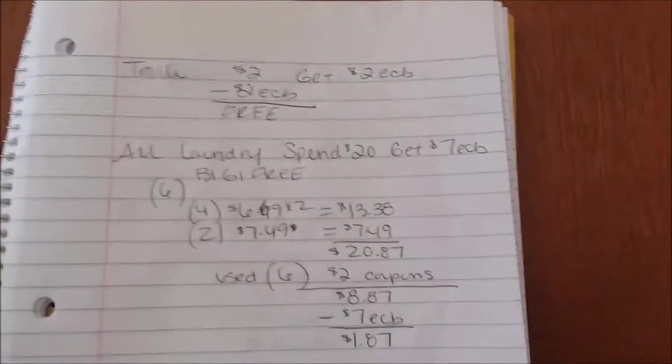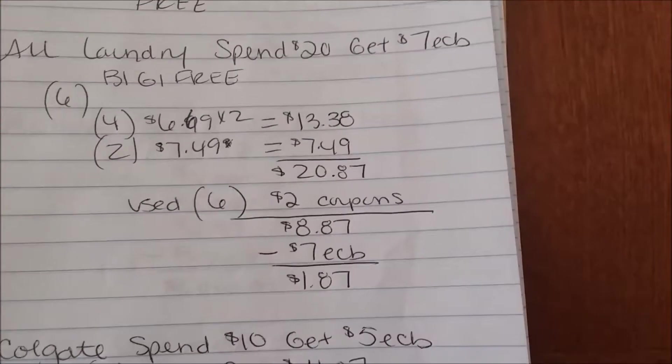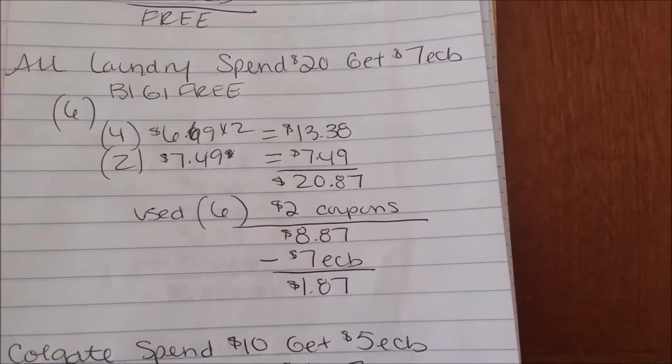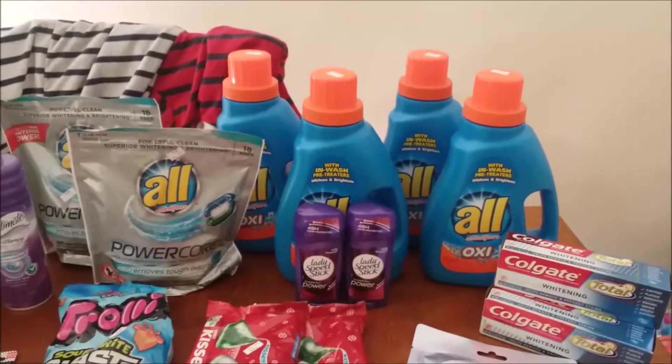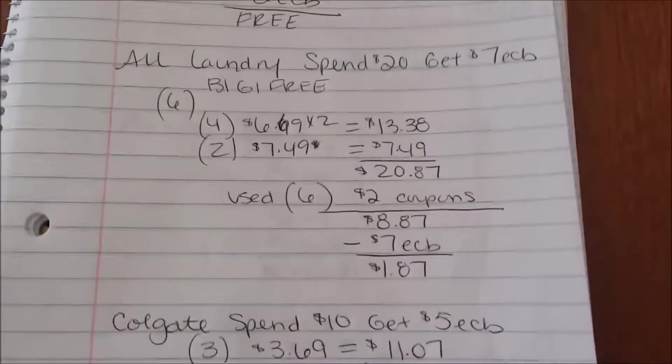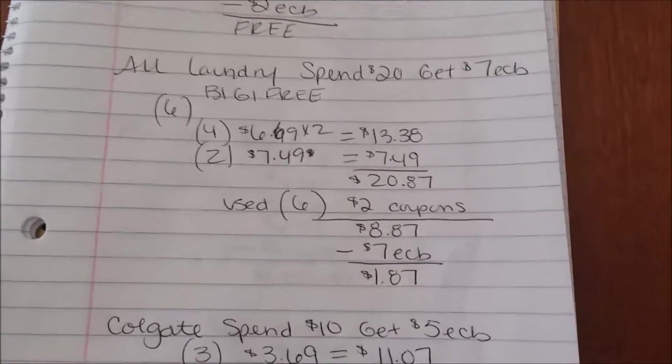After getting back my $7 ECB it was only $1.87 for six laundry soaps right there. That is an amazing deal. That's less than 99 cents per laundry soap. If you guys need laundry soap make sure you run out to CVS, that's an amazing deal for six laundry soaps that's less than 99 cents.